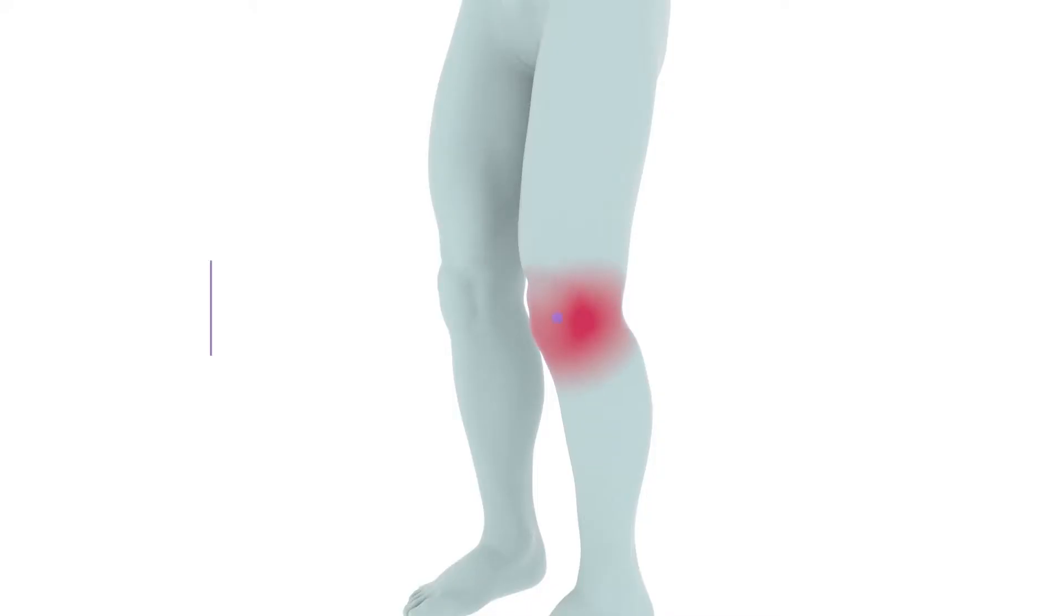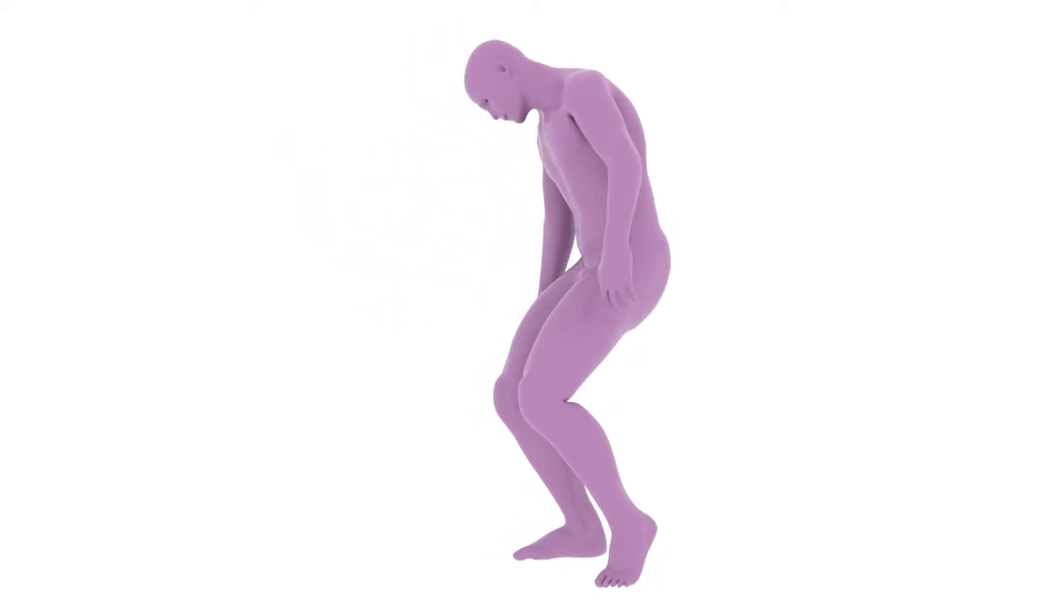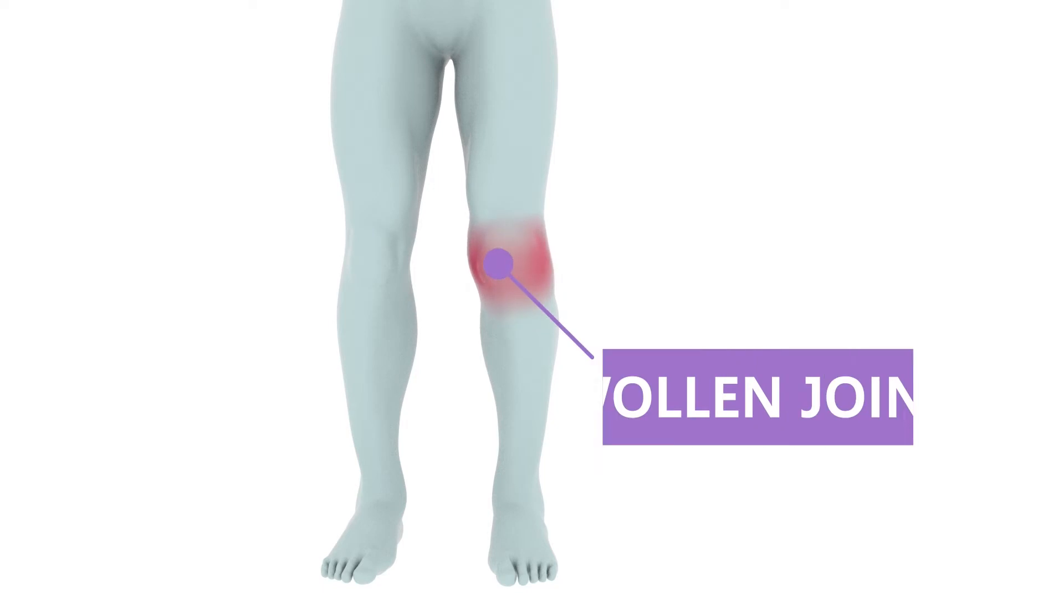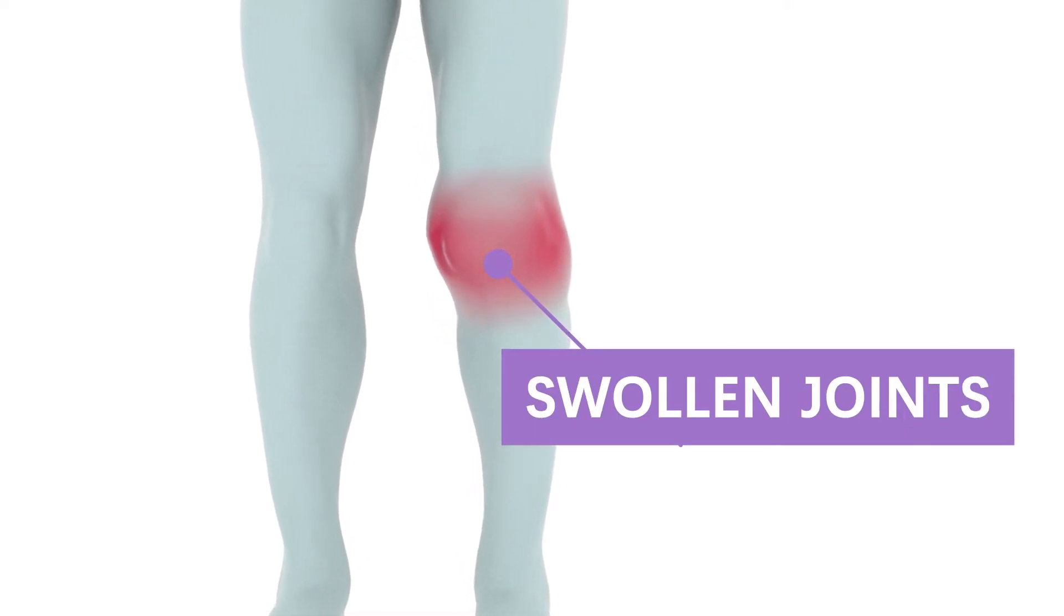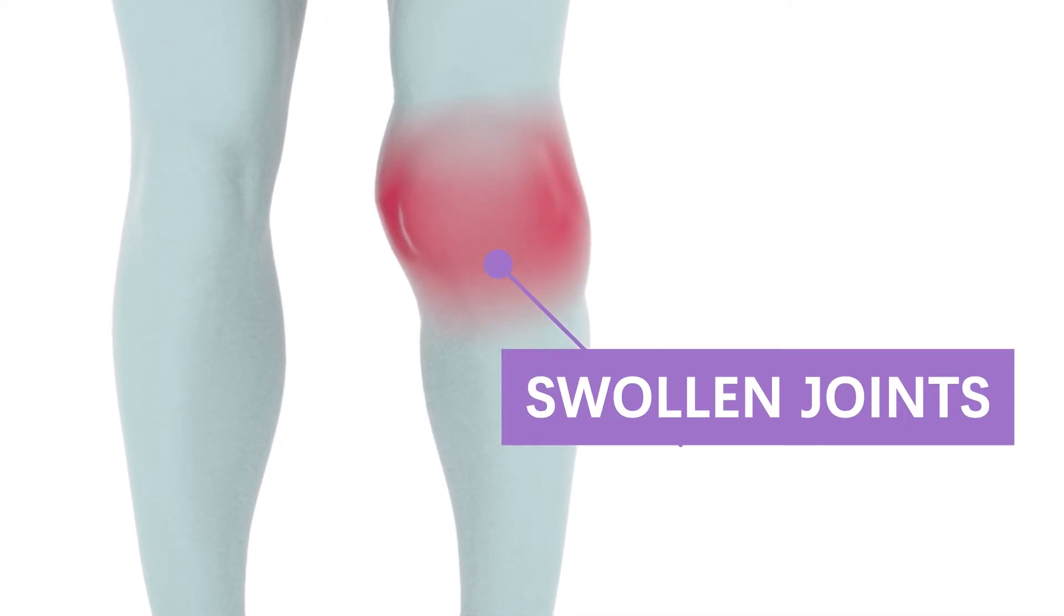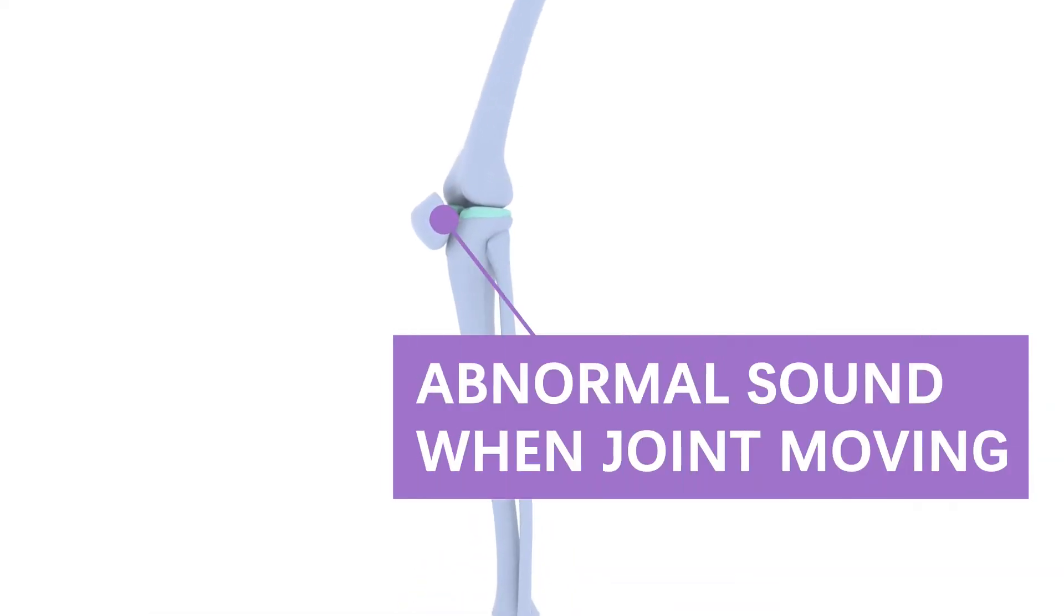Symptoms of a meniscus tear include knee pain when walking or exercising, which can be exacerbated by twisting or rotating activities. Swollen joints. Knee swelling can occur within 24 hours of an injury. The knee joint makes an abnormal sound when moving.